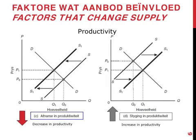A decrease in productivity will move the supply curve towards the left, meaning that less is being supplied at every price. Whereas an increase in productivity increases the supply — the whole curve moves towards the right. The equilibrium price is lower and the equilibrium quantity is higher.